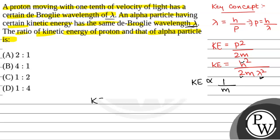So kinetic energy of proton to kinetic energy of alpha particle equals mass of alpha particle to mass of proton. Since kinetic energy is inversely proportional to mass of particle, and we know that mass of alpha particle to mass of proton is 4 to 1, the correct option is option B, 4 to 1. Hope you all understood it well. Best of luck.